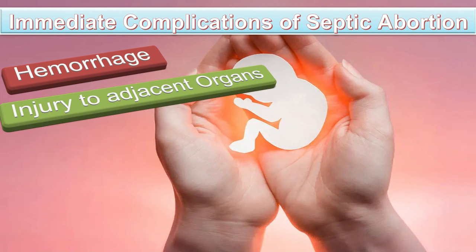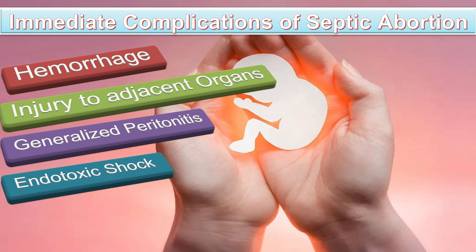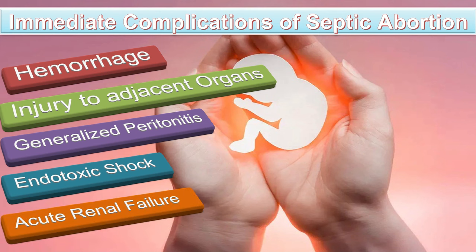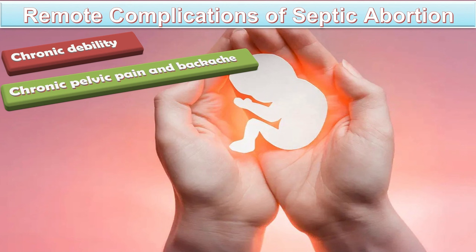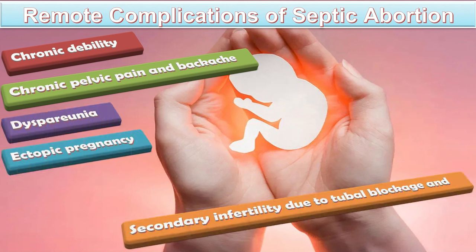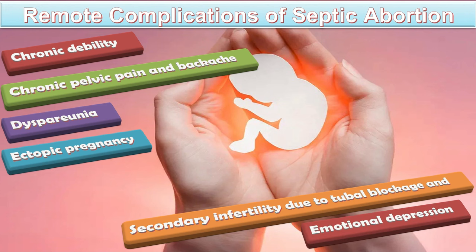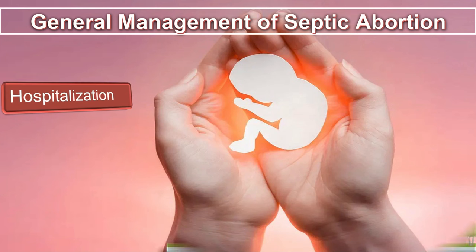Complications can be immediate or remote. Immediate complications include hemorrhage, injury to adjacent organs including the uterus and bowel, generalized peritonitis, endotoxic shock, and in severe cases acute renal failure. Remote complications include chronic debility, chronic pelvic pain and backache, dyspareunia, ectopic pregnancy, secondary infertility due to tubal blockage, and emotional depression.